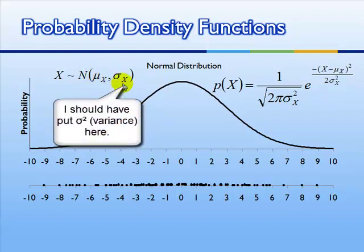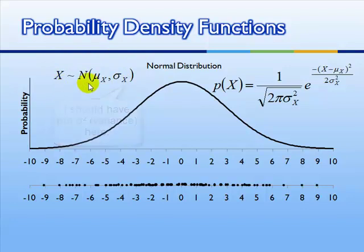And in the normal distribution, there are two numbers that we care about, the mean and the standard deviation. So the whole thing together means x is a normally distributed variable with a particular mean and a particular standard deviation.